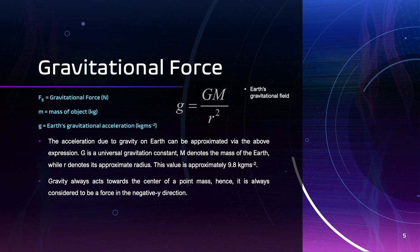M denotes the mass of the Earth, while R denotes the approximate radius of the Earth. This value is approximately 9.8 meters per second squared. Gravity always acts towards the center of a point mass. Therefore, it can always be considered to be a force acting in the negative y direction.